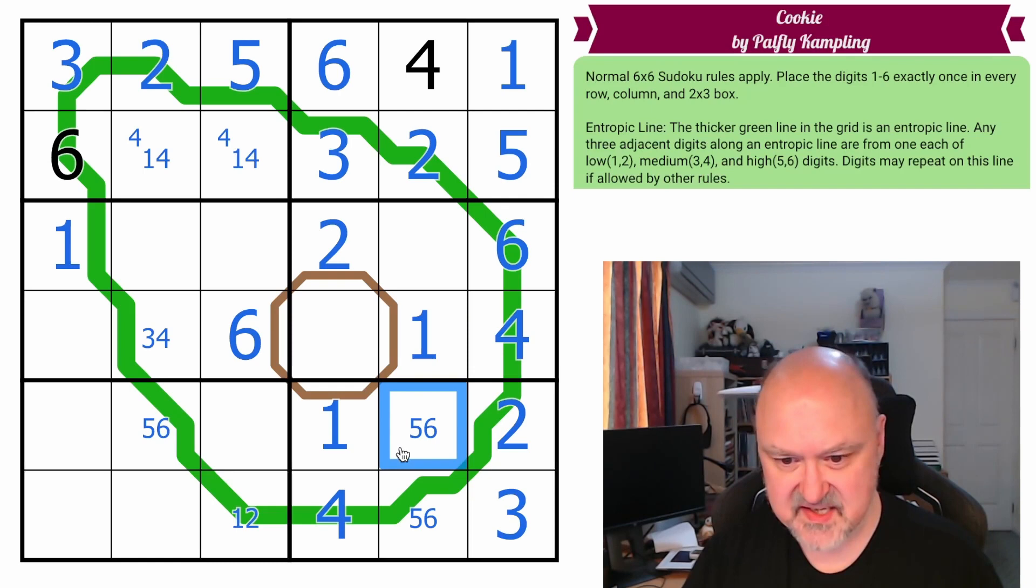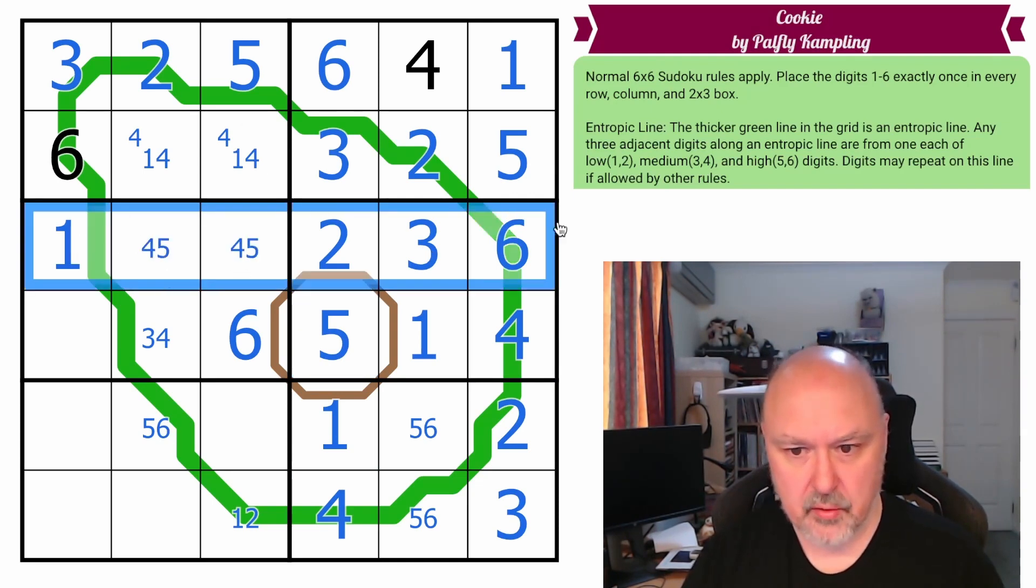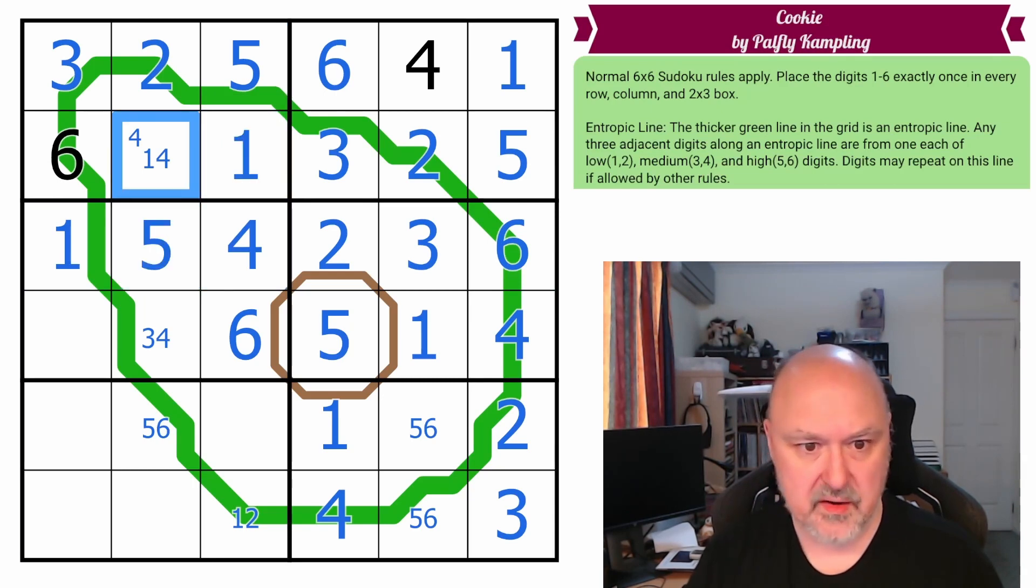This is a 5, 6 in the box, which means this has to be the 3, which makes this the 5. These are 4 and 5 for the row, but the 5 looks down, making that the 4 and that the 5, which makes that the 1 and that the 4, which makes that the 3.